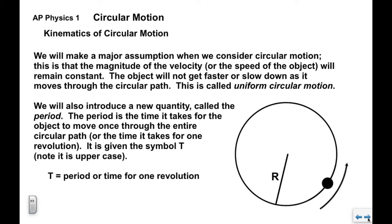We're also going to introduce a new quantity called the period. The period is the time it takes for the object to move once through the circular path, or the time for one revolution — also called the orbital period. It's given the symbol capital T. This case does matter: lowercase t is generic time, while capital T is the period referring to the time it takes to go around once.